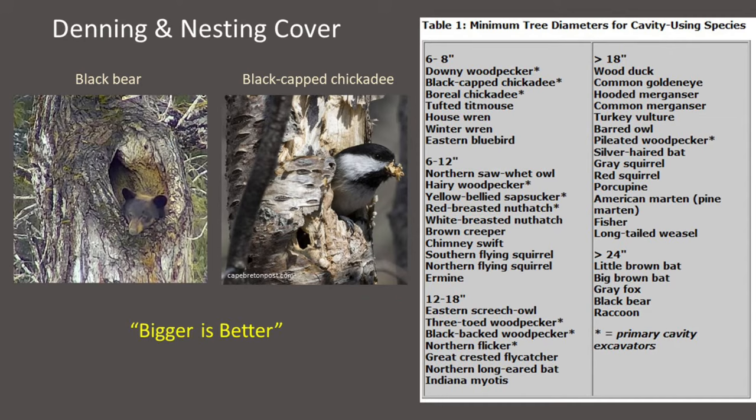As a general rule, bigger is better for wildlife, meaning that larger diameter trees can accommodate a greater range of wildlife body sizes than smaller trees. As the chart indicates, trees 24 inches and larger in diameter are able to accommodate even our largest cavity-using species, the black bear.